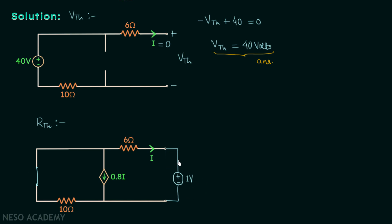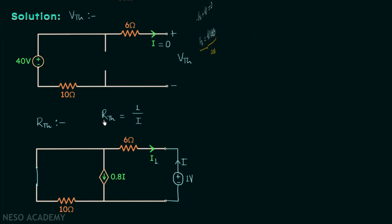I will assume the current leaving the positive terminal of this source is equal to I, and I will name the dependent source current I1. The resistance between these two terminals, which is the equivalent resistance RTH, will be equal to the voltage (1 volt) divided by the current I. This means if we can find out current I, we will easily have the Thevenin's equivalent resistance RTH.